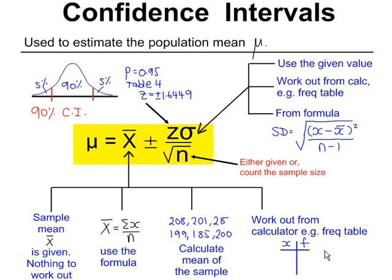Or you could be given a frequency table, in which case you need to turn on the frequencies in your calculator, enter the data, and then get the sample mean from your calculator.